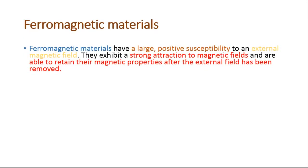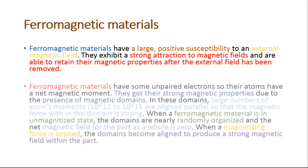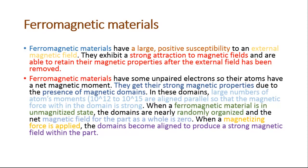Ferromagnetic materials have a large positive susceptibility to an external magnetic field. They exhibit a strong attraction to magnetic fields and are able to retain their magnetic properties after the external field has been removed. Ferromagnetic materials have some unpaired electrons so their atoms have a net magnetic moment.